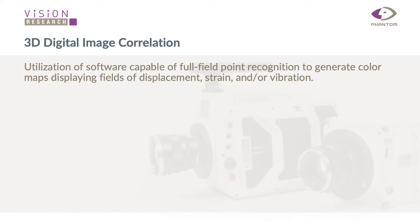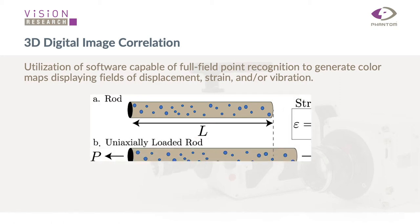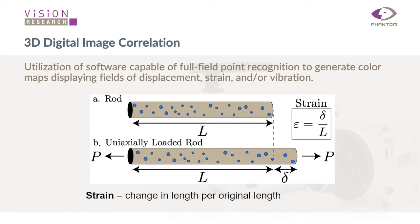3D digital image correlation is essentially the utilization of software capable of doing full-field point recognition from images to generate color maps that display fields of displacement, strain, and/or vibration. A basic example: if you look at this rod and you put some surface markers onto it — for example, those blue little circles — and you stretch it, these dots will not only move from their initial position, but their nearest neighbors will also move relative to one another. Based on how they move, you can calculate the displacement, strain, and/or vibration of local areas on that sample.